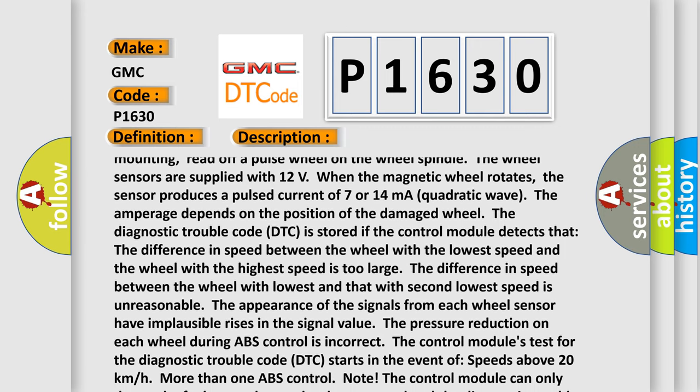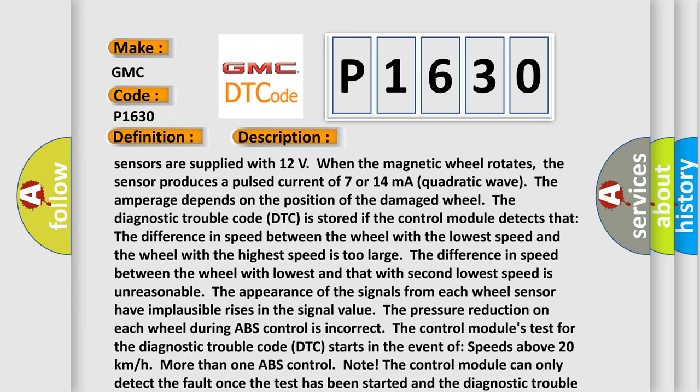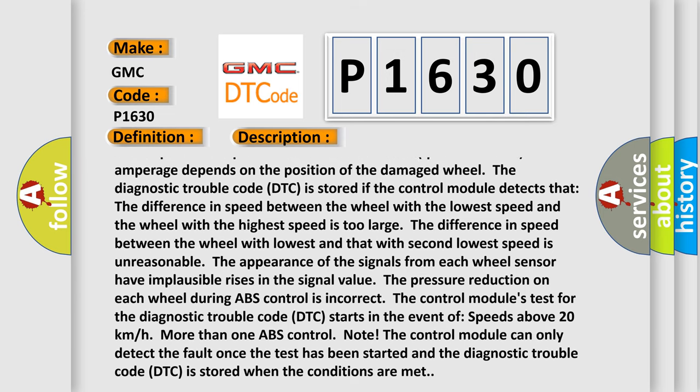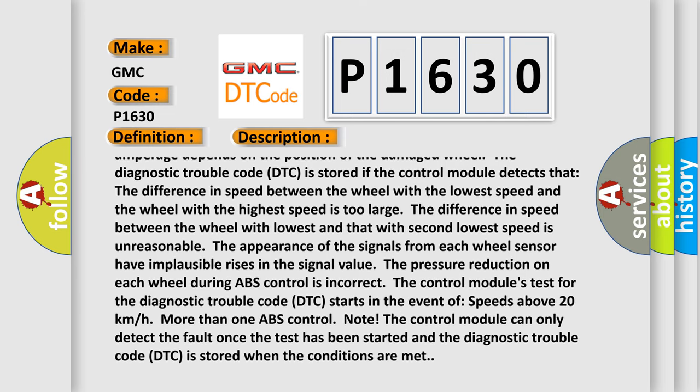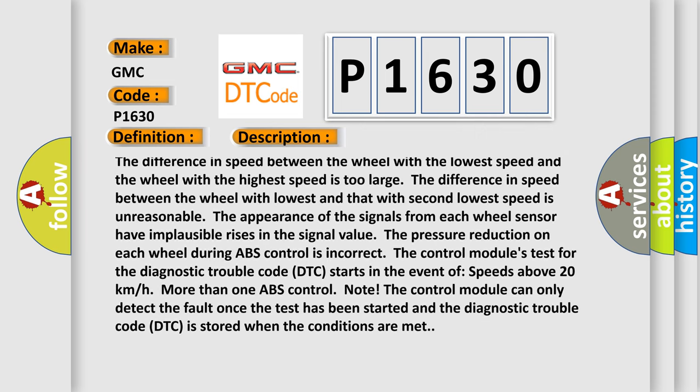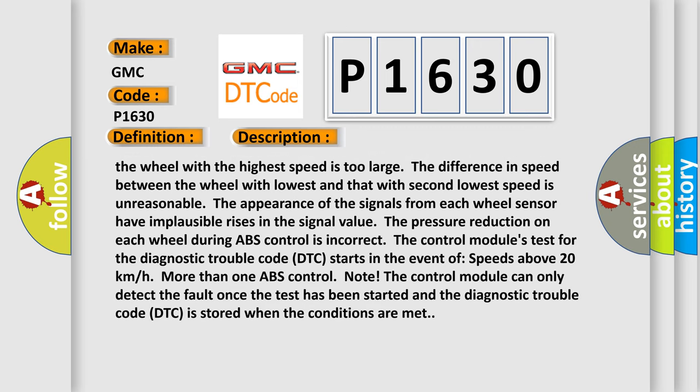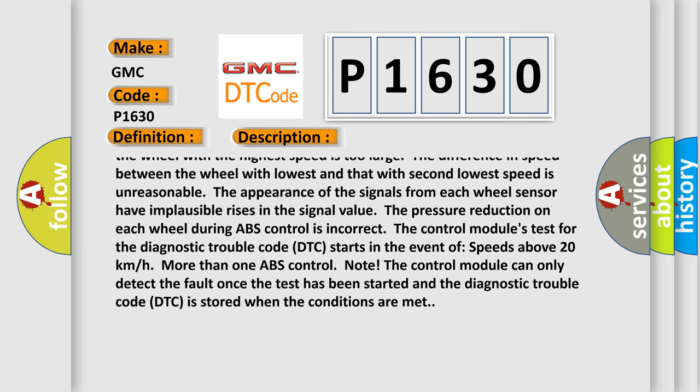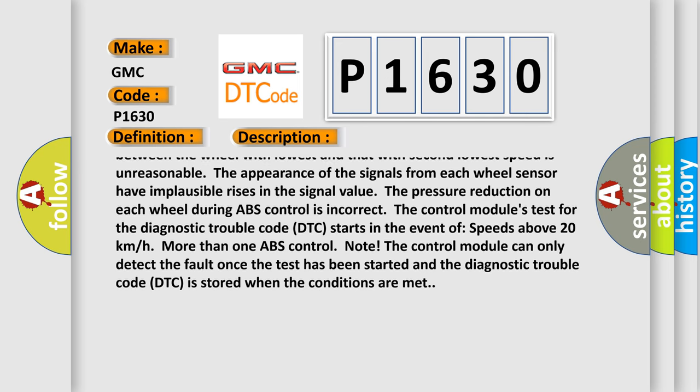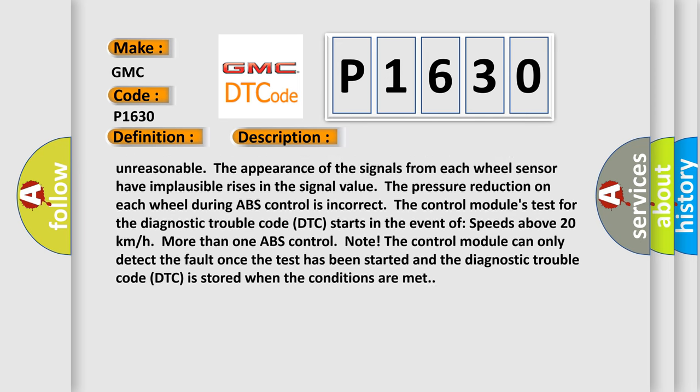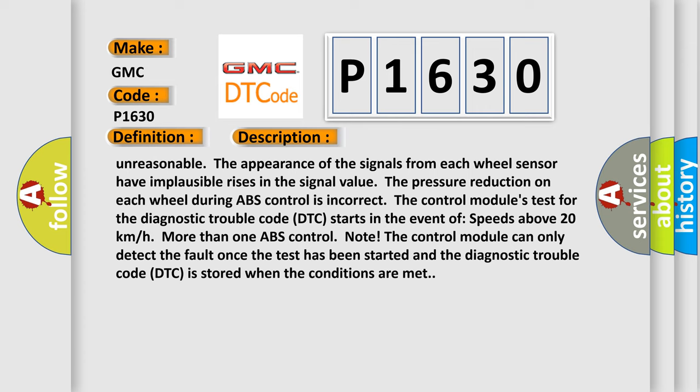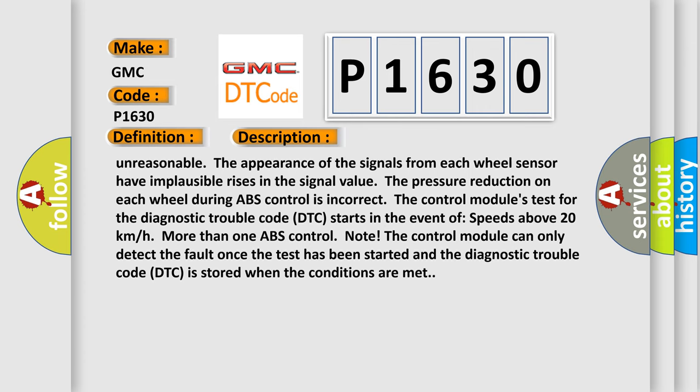The amperage depends on the position of the damaged wheel. The diagnostic trouble code DTC is stored if the control module detects that the difference in speed between the wheel with the lowest speed and the wheel with the highest speed is too large. The difference in speed between the wheel with lowest and that with second lowest speed is unreasonable. The appearance of the signals from each wheel sensor have implausible rises in the signal value. The pressure reduction on each wheel during ABS control is incorrect. The control module's test for the diagnostic trouble code DTC starts in the event of speeds above 20 kilometers per hour more than one ABS control note. The control module can only detect the fault once the test has been started and the diagnostic trouble code DTC is stored when the conditions are met.